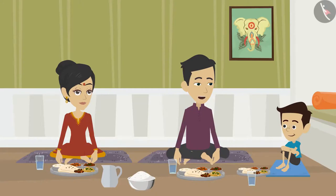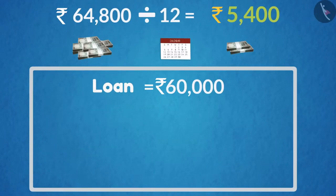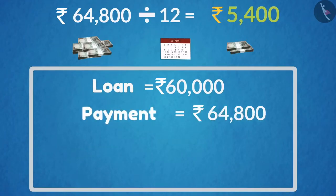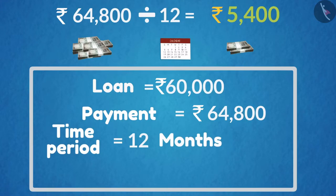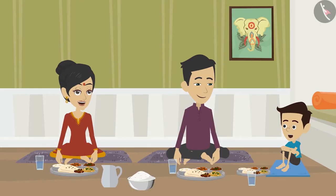5,400 — absolutely correct! So that means if we take a loan of 60,000 rupees, which is our principal amount, and we have to repay 64,800 rupees in one year, then we have to deposit 5,400 rupees every month in the bank, which is also called an installment.